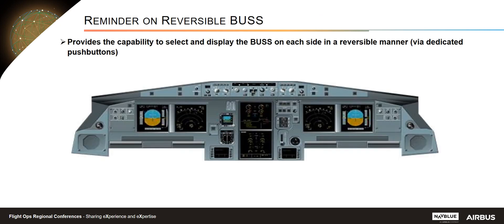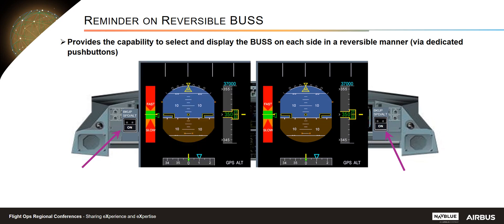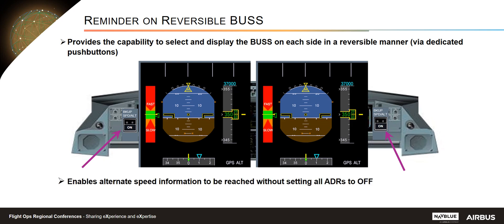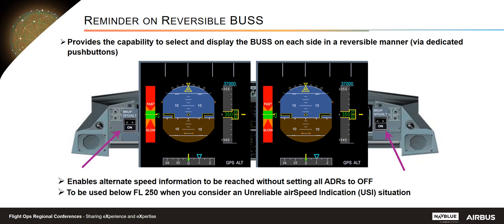The reversible BUS provides the capability to select and display the BUS on each side in a reversible manner using dedicated push buttons. When you press the backup speed altitude push button, the backup speed scale appears with a green band as alternate speed information without setting all ADRs to off. The reversible BUS must be used below flight level 250 when you encounter a situation of unreliable airspeed indication.